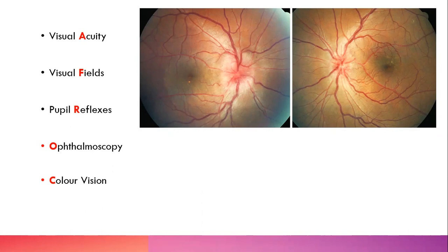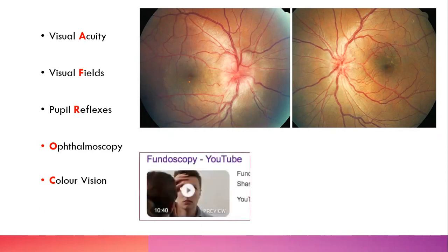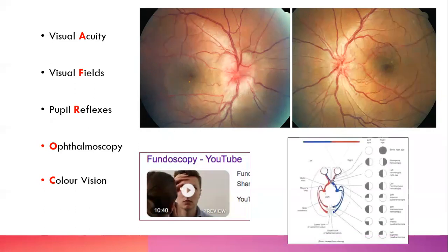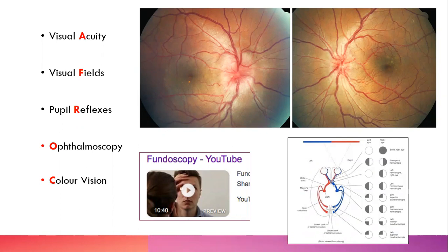Examination-wise, it's the normal approach to optic nerve exam — the AFCS acronym — which we've covered in the skills workshop and other lectures. We've got the ophthalmoscopy video online. You also need to know your visual pathway so that if you're shown a visual field defect, you can identify where in the pathway the lesion is. You should be able to sketch that out quickly in a clinical or exam situation.